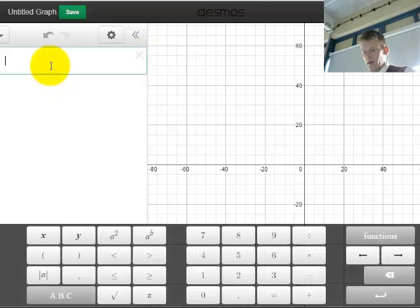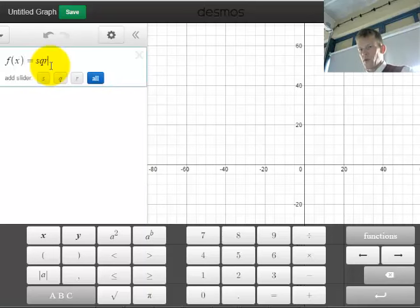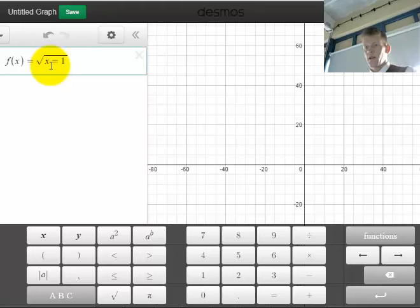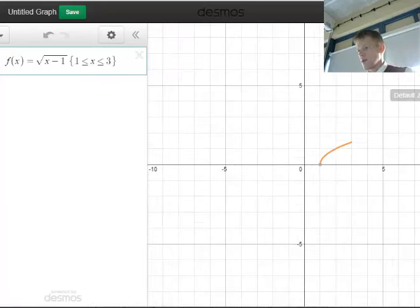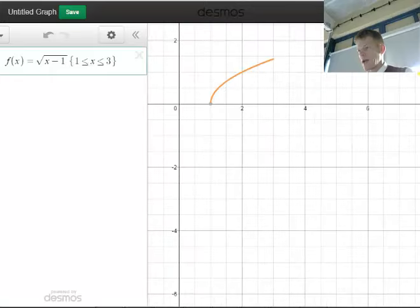So, let me put in the function f of x equals the square root of x minus 1. And I'm going to limit the domain between 1 and 3. I need to zoom out so we can see that better. Oh, there we go. And that was kind of what I had to hand sketch up.